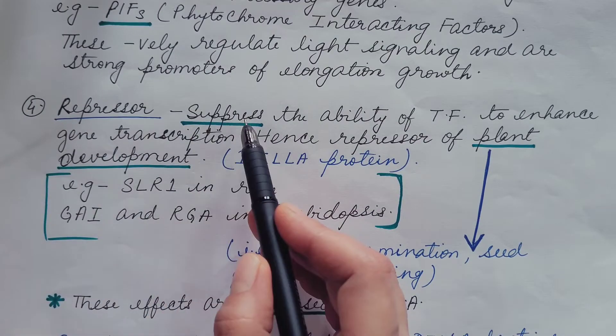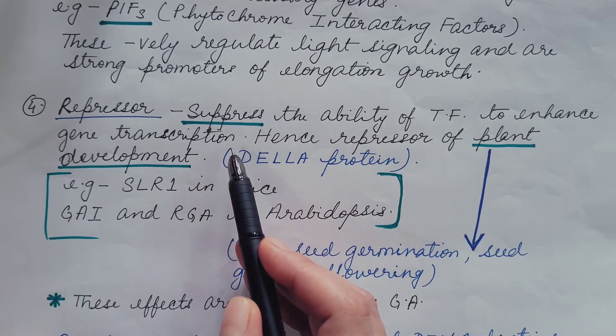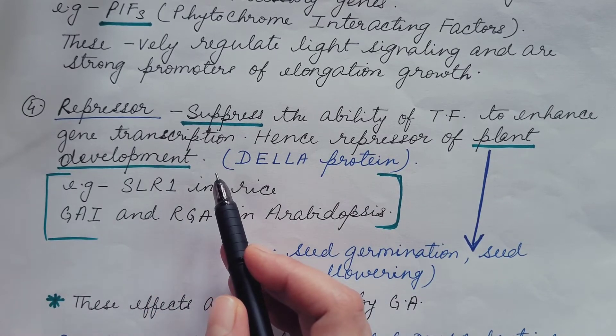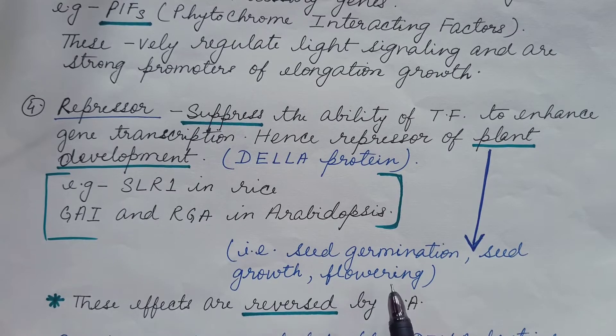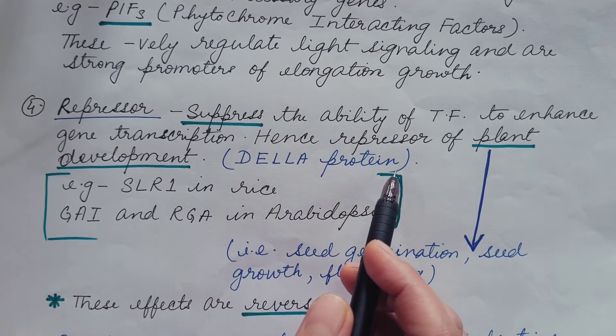Fourth is repressor. It suppresses the ability of transcription factor to enhance gene transcription. Hence, these are repressors of plant development, that is, these repress seed germination, seed growth, flowering, etc. Here the repressor is DELLA protein.